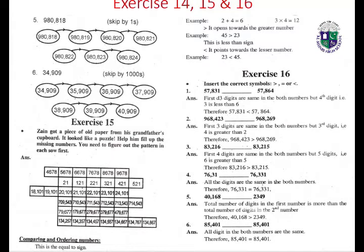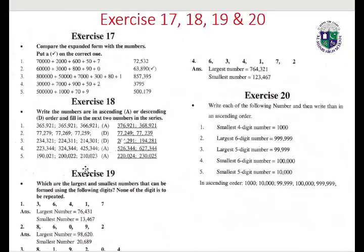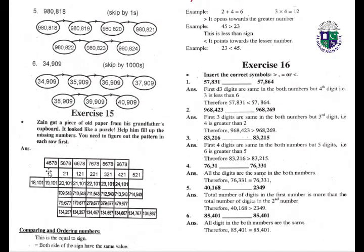88,980; 130,909. We have: 101,215. 909,000; 10,000; 1,000. Sequences: 7,678; 8,678; 9,678. Then: 21; 121; 221; 321; 421; 521.